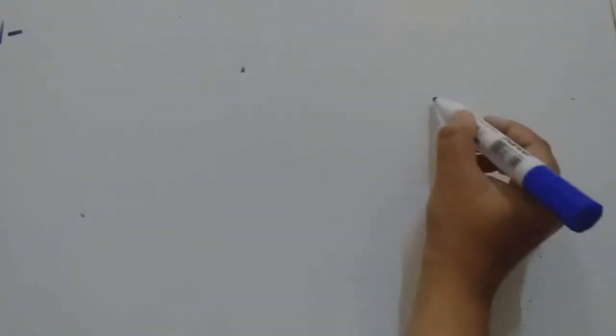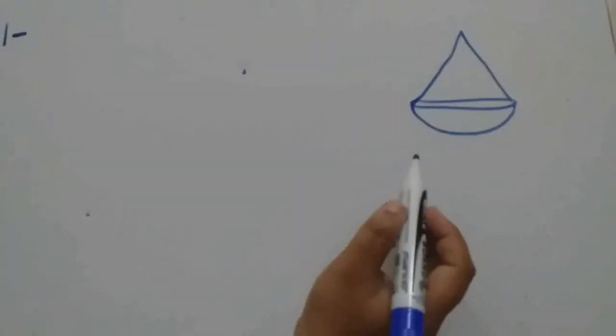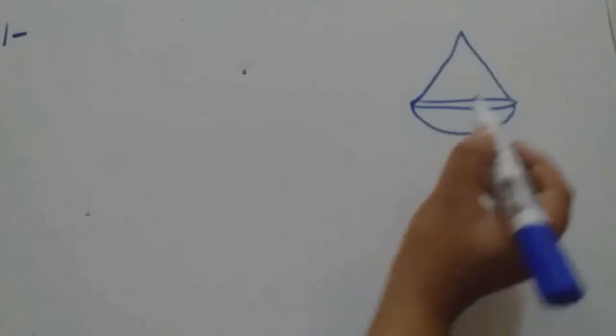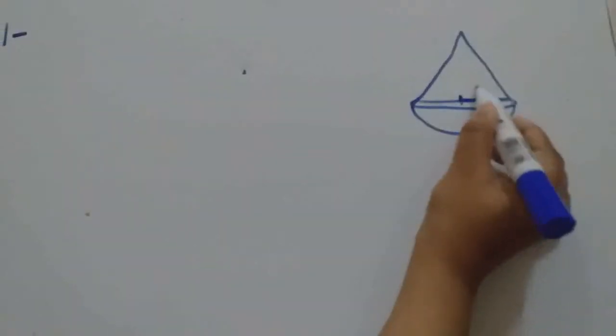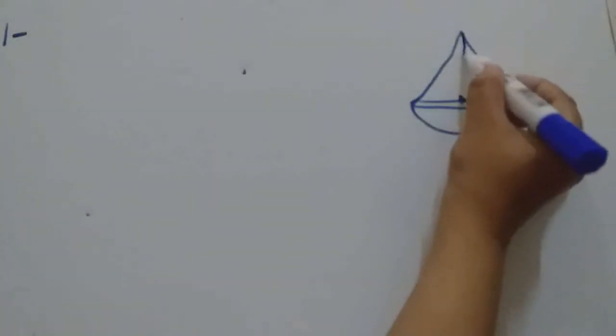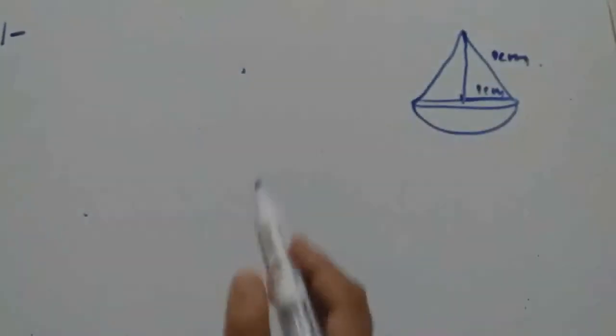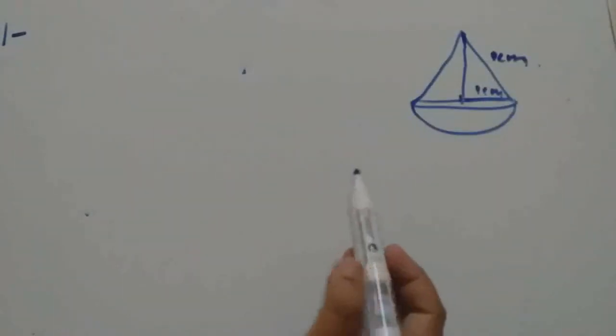A solid is in the shape of a cone standing on a hemisphere. The cone is standing on the hemisphere, and both their radii are equal to one centimeter — they share the same radius. The height of the cone is equal to its radius, meaning the height of the cone is also one centimeter. Find the volume of the solid in terms of pi.